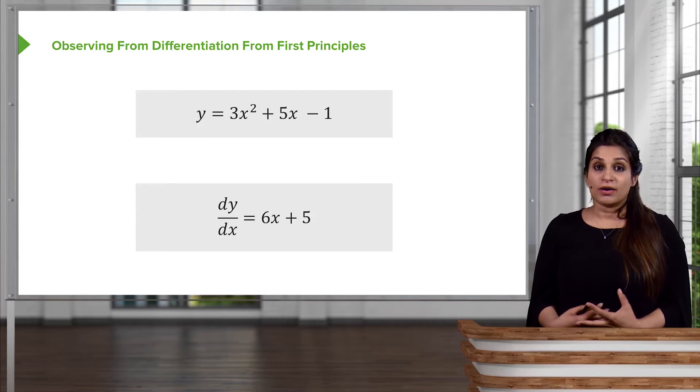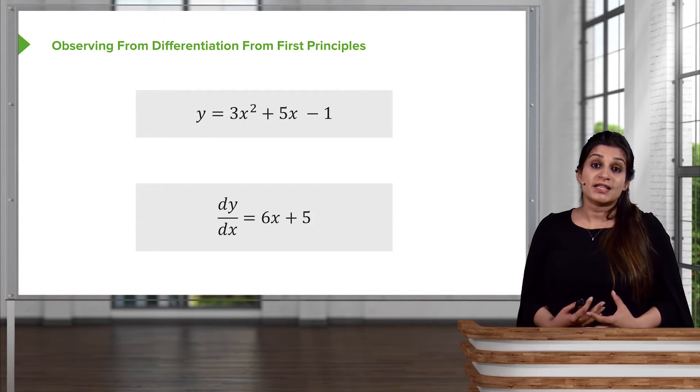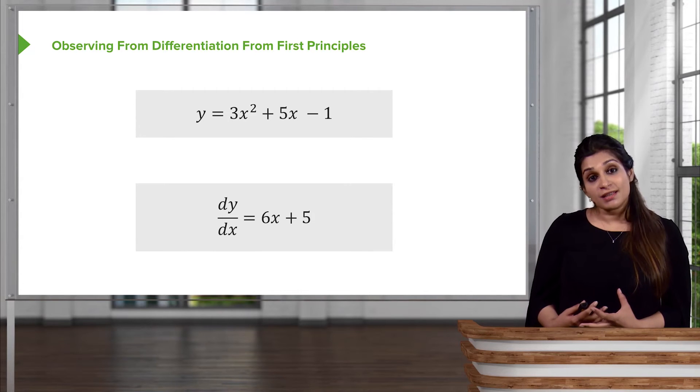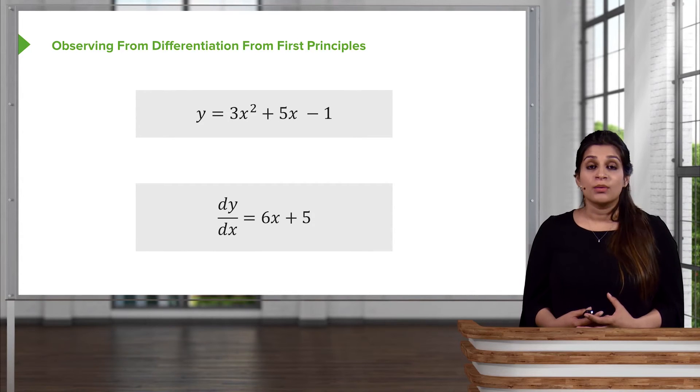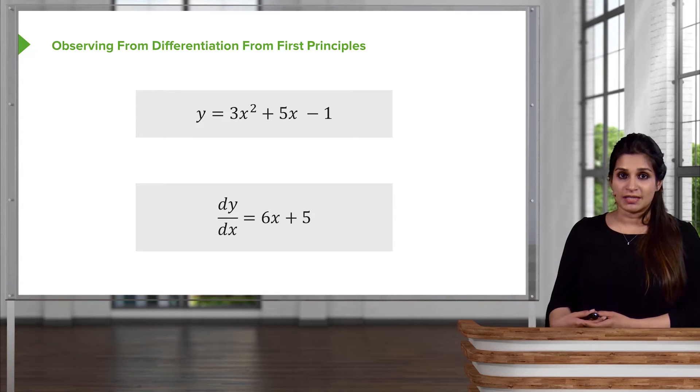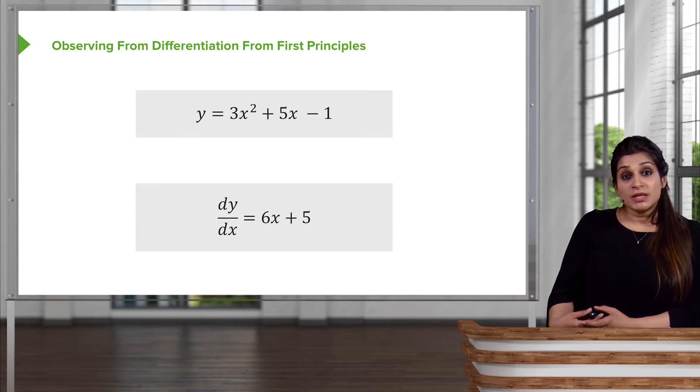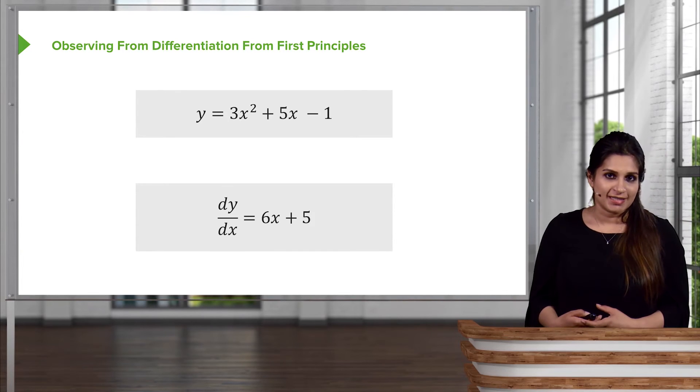But thankfully to modern calculus, we now have much faster ways of doing this. And we discussed that faster way previously, where you bring the power down and multiply it, and you decrease the power by 1. Remember what we said, that any constants at the end go to zero, or they just disappear.